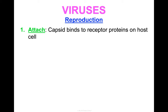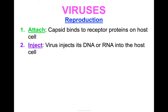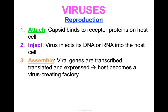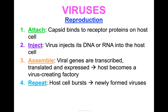Let's talk about how viruses reproduce. Here is a general overview: a virus attaches to a host cell, and the capsid binds to receptor proteins on the host cell. Then the virus injects its DNA or RNA into the host cell. Viral genes are transcribed and translated into proteins that are expressed, turning the host into a virus-creating factory. That host cell then bursts — it lyses — releasing newly formed viruses, which repeat this process by attaching to new host cells. This is the lytic lifestyle of a virus.